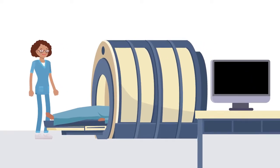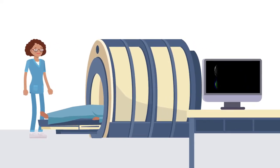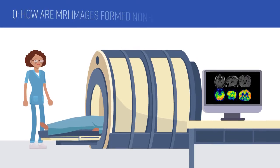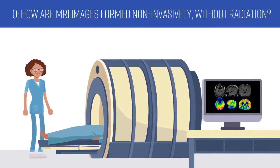Advancements in medical imaging allow us to study parts of the body, including the brain, like never before. But how are MRI images formed non-invasively and without radiation?